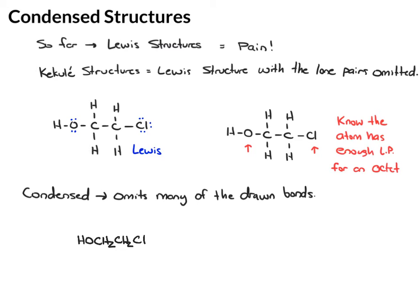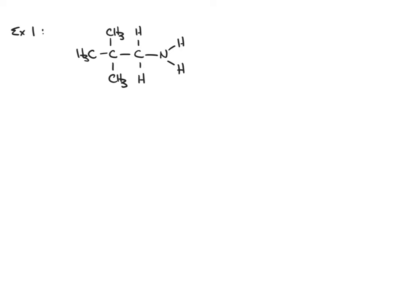This is partially condensed. To further condense this, we can put these two together in parentheses and say there's two of those. We'll write HO, parentheses CH2 subscript 2, Cl. This 2 tells us we have two repeating groups.